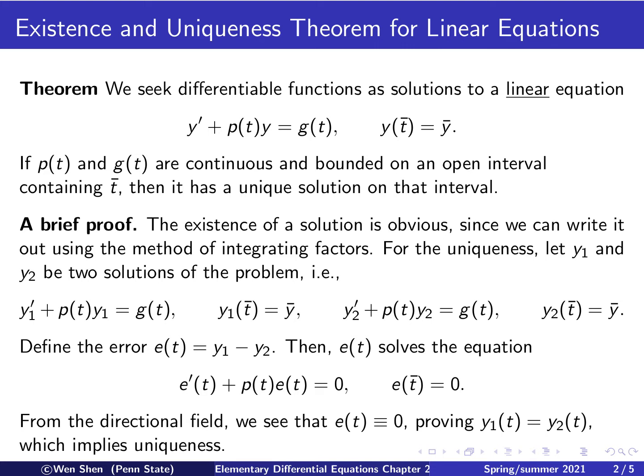Now we can use our knowledge from the discussion of the directional field. If you move this term to the right-hand side, I have e prime equal to p times e. And we see that if e at an initial point is 0, or at any point is 0, the directional field at that point will remain horizontal, and e constantly equal to 0 is the solution. And if that is the solution, then that means y1 must equal to y2, and therefore there is only one solution. This implies the uniqueness.